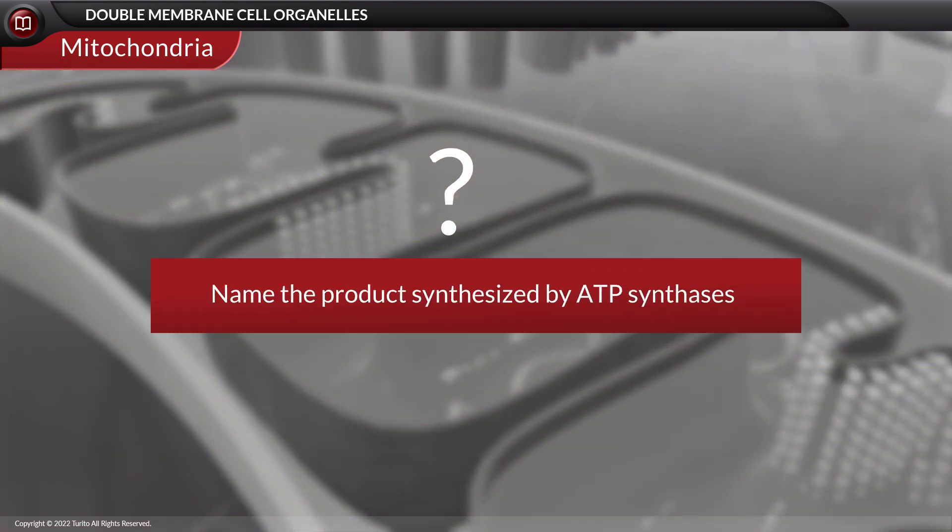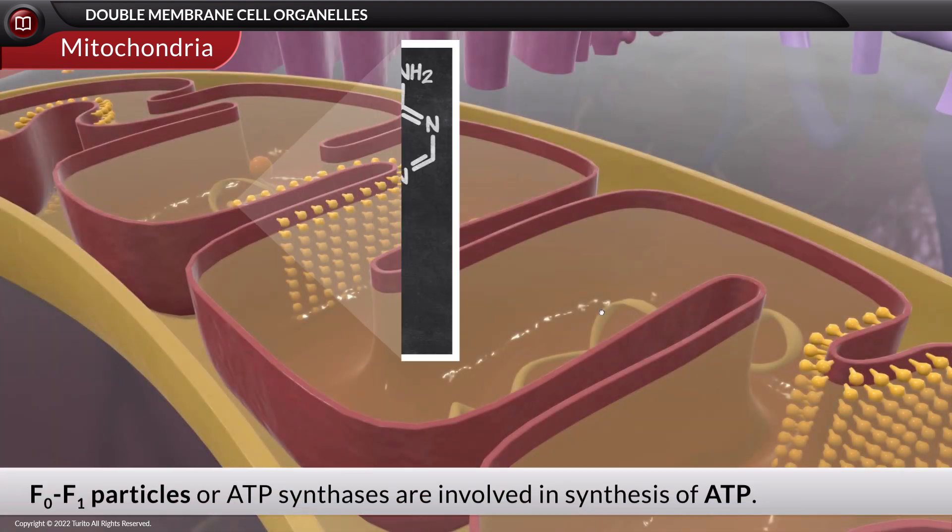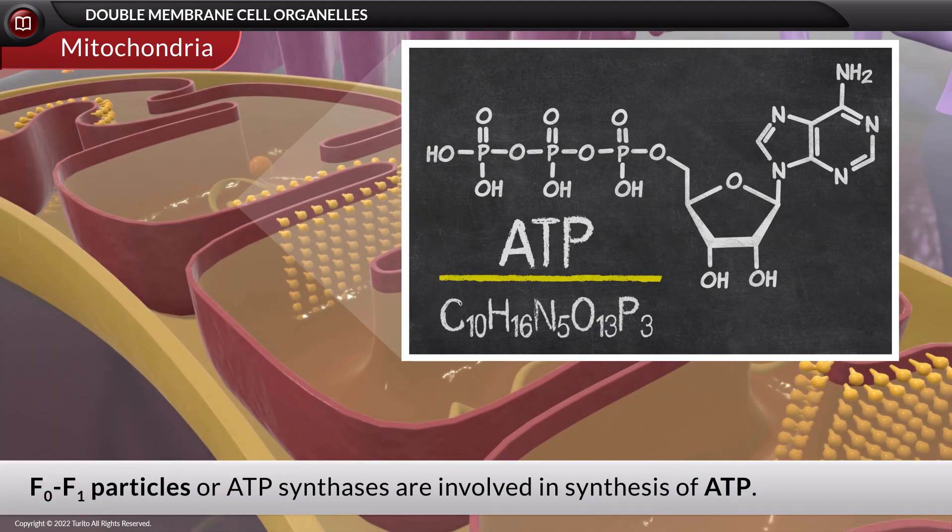Name the product synthesized by ATP synthases. ATP synthases are directly involved in the synthesis of adenosine triphosphate, ATP, the energy coin of the cell.